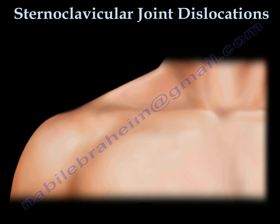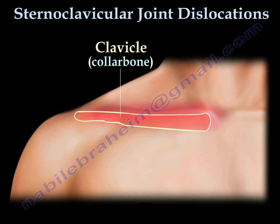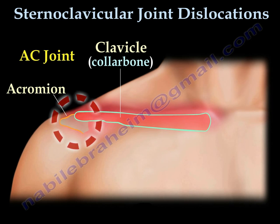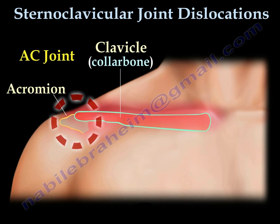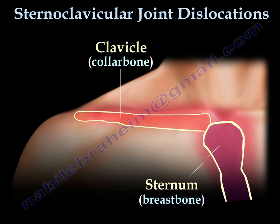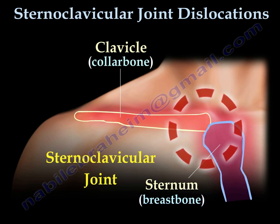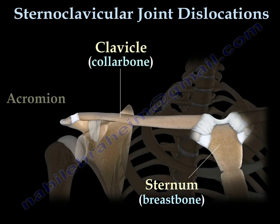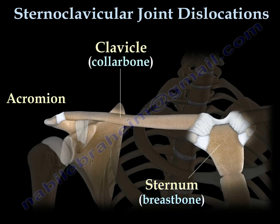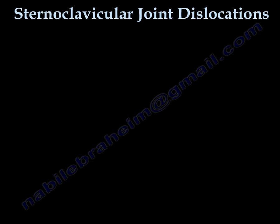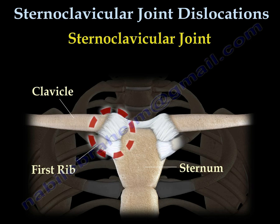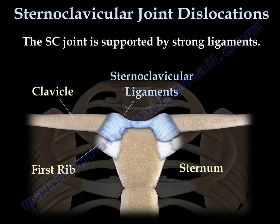Sternoclavicular Joint Dislocation. The clavicle is attached to the top of the shoulder, the acromion, through the AC joint. Injury to this joint will cause shoulder separation. The clavicle is also attached to the sternum in the middle of the body through the sternoclavicular joint. These are the bony structures of this area. The sternoclavicular joint is supported by strong ligaments: the sternoclavicular and the costoclavicular ligaments.